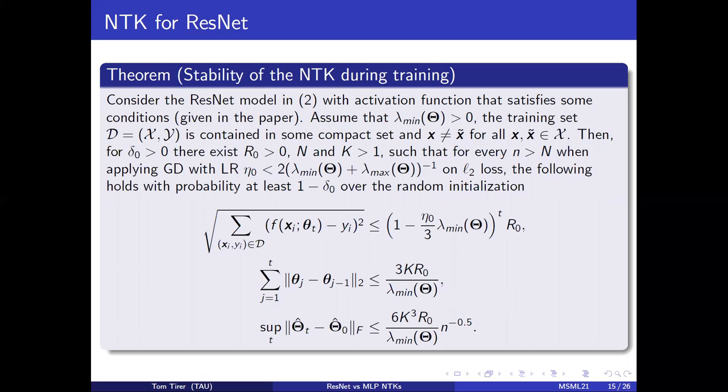Basically, this result shows that under a few assumptions on the training samples, such as non-repeating samples, we have that gradient descent with small enough learning rate obeys the following properties with high probability.